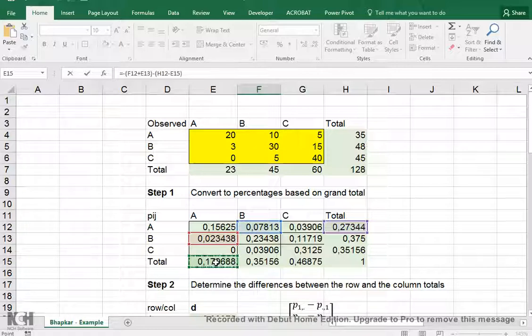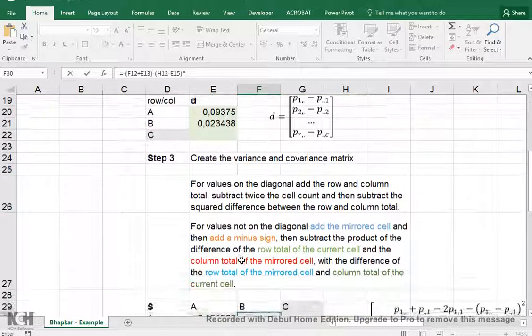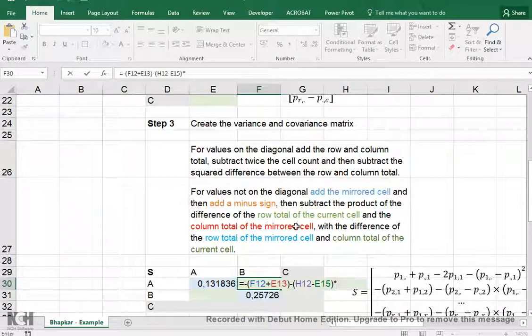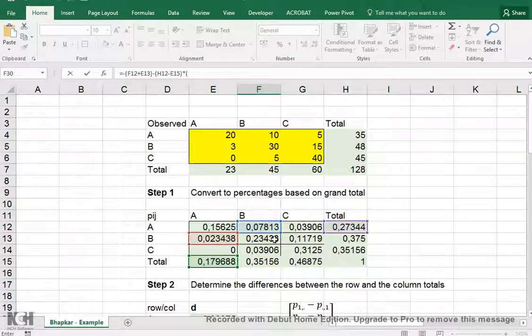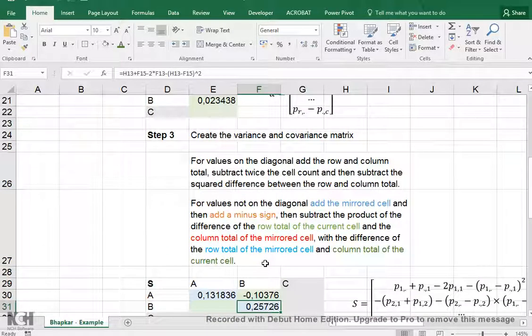and its difference with the column total of the mirrored cell, and this was the mirrored cell and this is its column total and it's a product so times something. Times the difference of the row total of the mirrored cell and the column total of the current cell, so the same thing but then actually the other way around. The row total of the mirrored cell, this is the mirrored cell so this is its row total minus the column total of the original cell.